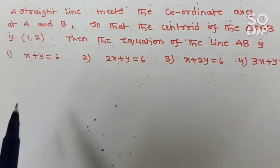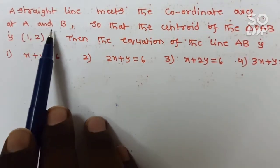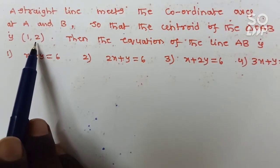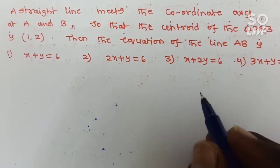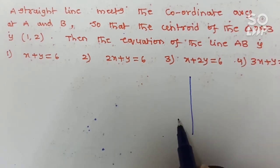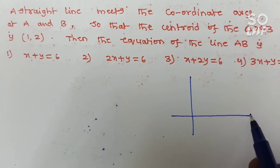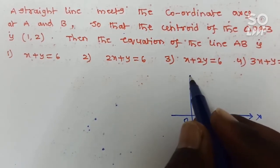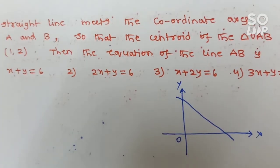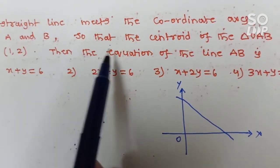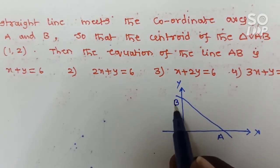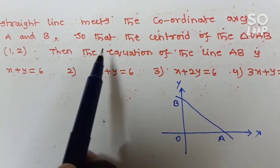Next problem: a straight line meets the coordinate axis at A and B such that the centroid of triangle OAB is (1, 2). Find the equation of line AB. If any line meets the coordinate axis, it makes intercepts. Let the equation of the line be x/A plus y/B equals 1. The centroid of this triangle is given as (1, 2).